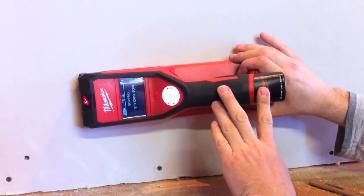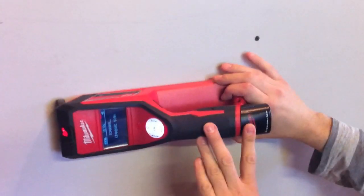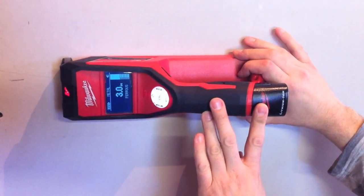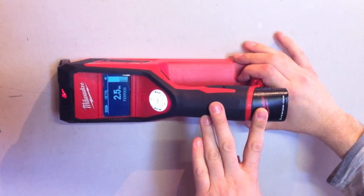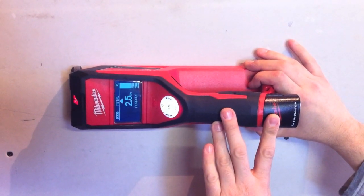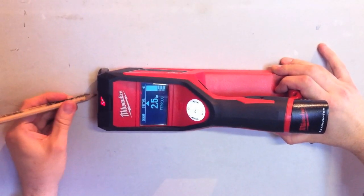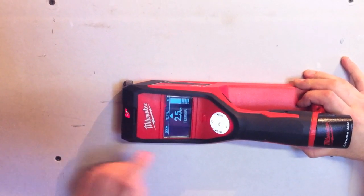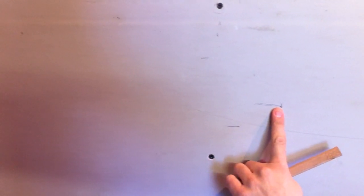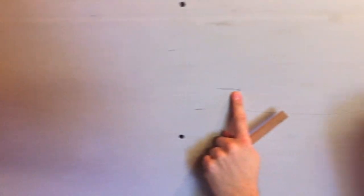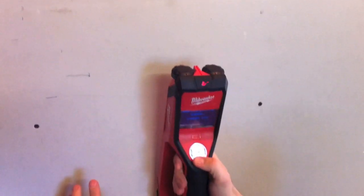So what we're going to do is we're going to slowly go up the wall. And as you can see it's detecting ferrous metal. And right there is the center. So we'll take our pencil and we'll mark. Okay, so now if you zoom out a little bit, you'll see that it's detecting exactly where that conduit is.